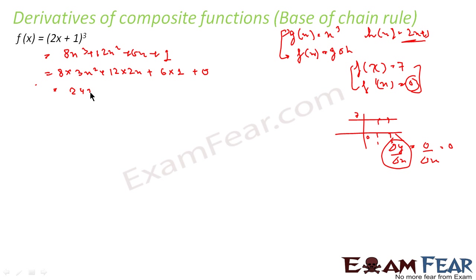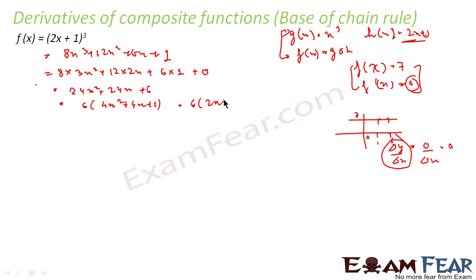So the crude derivative comes out to be 24x² + 24x + 6. Taking 6 common gives 6(4x² + 4x + 1), which is nothing but 6(2x+1)². So the derivative of (2x+1)³ by the crude approach is 6(2x+1)². I took the power 3 just so I could expand it and verify the result — if it were (2x+1)⁹ it would be very difficult to expand.